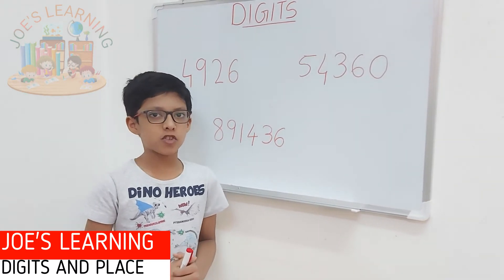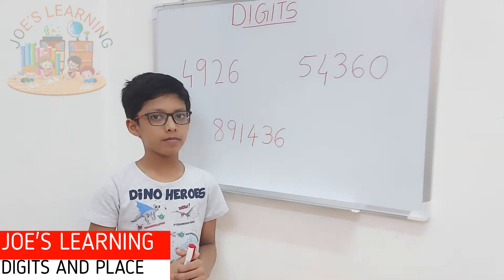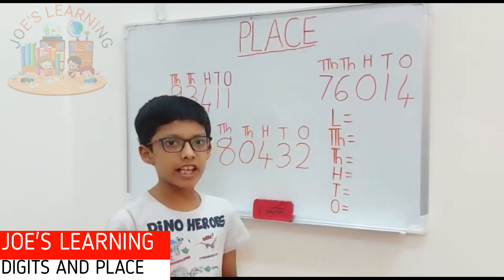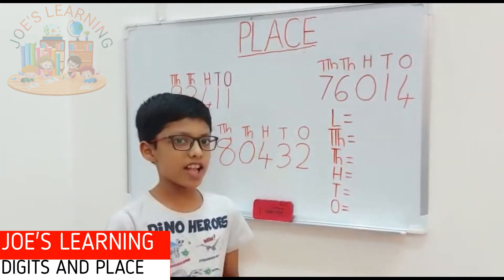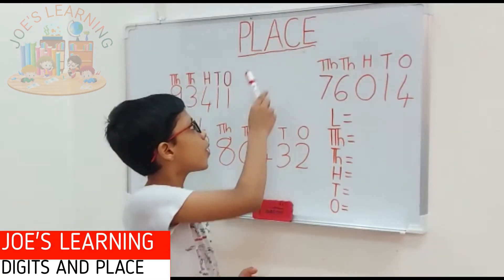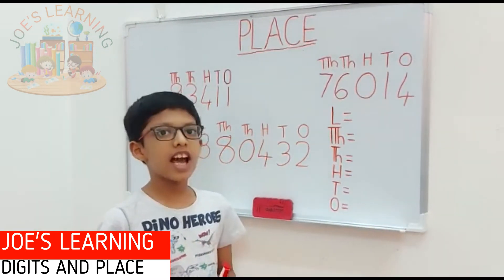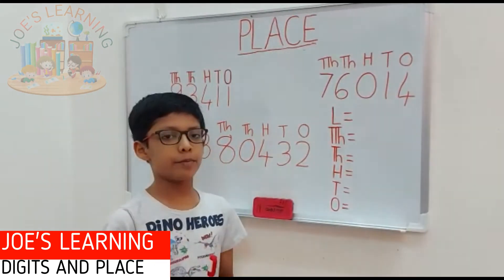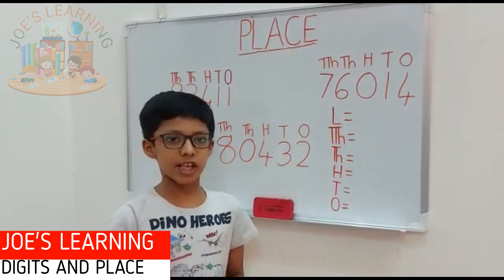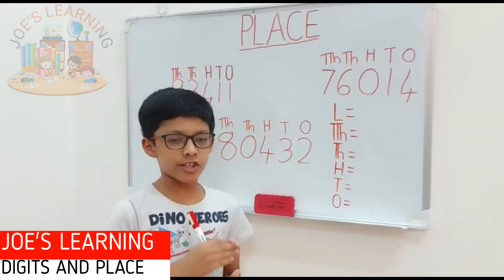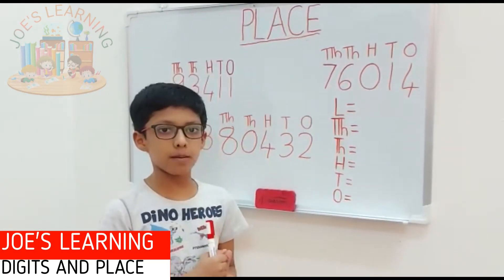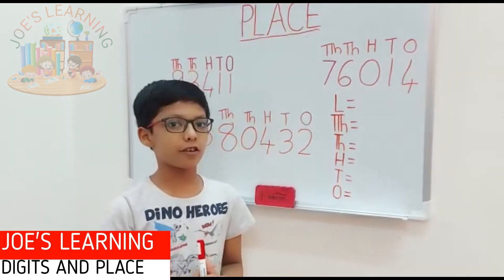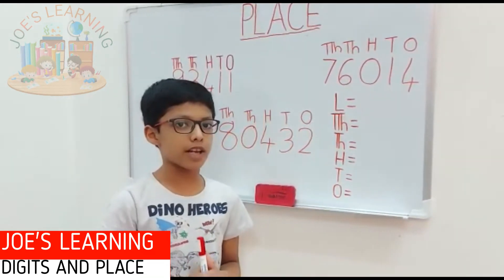Now let's move on to the next topic, that is place. You may be thinking how digits are related to this topic. Well, let me explain by telling you what place is. As I told you before, digits are the parts of a number, and those digits have been put into a particular place. Those particular places have different names. Let us take a look at each of them one by one.